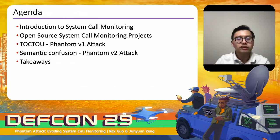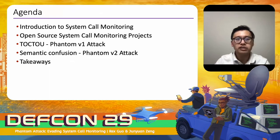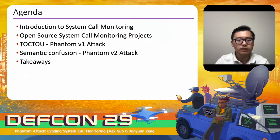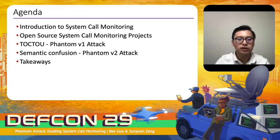The agenda of this talk: we will discuss system call monitoring in more detail, then cover the two open-source syscall monitoring projects we analyzed. We'll discuss the first vulnerability — the TOCTTOU issue — exploited using Phantom V1 attack, then the second vulnerability — a semantic confusion issue — exploited using Phantom V2 attack. Finally, we'll conclude with takeaways. I will hand over to JunYuan to talk about system call monitoring.